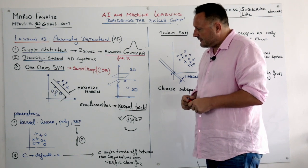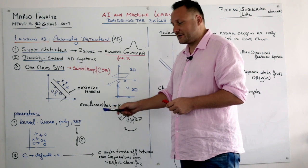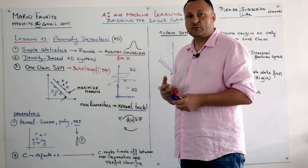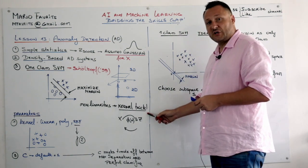And then the vectors that would actually define that margin we call the support vectors. Another thing that was interesting for what SVM is concerned is that it allowed us to deal with non-linearities. How did we do that? Well, we used a kernel trick.